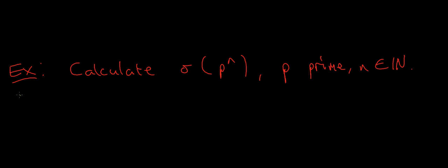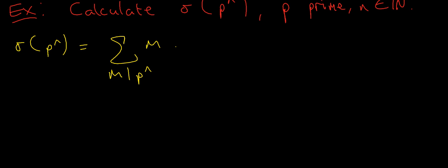If I look at p to the n, I want sigma of p to the n, which by definition is the summation of all the positive divisors m of p to the n. What are the divisors of p to the n?